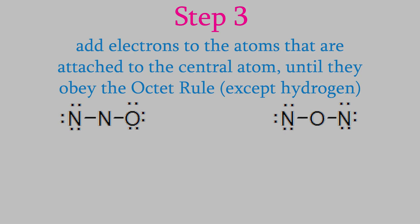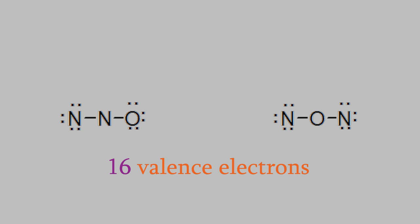If you count the electrons we've used so far, you'll see that we have 4 electrons in the bonds, and 12 dots for a total of 16 electrons. That means we've used up all of our valence electrons. But unfortunately, the central atom still doesn't obey the octet rule in either molecule. So, you might remember that our last step will be to convert some of the dots on the outer atoms into bonds.